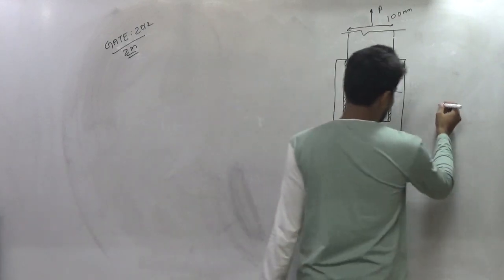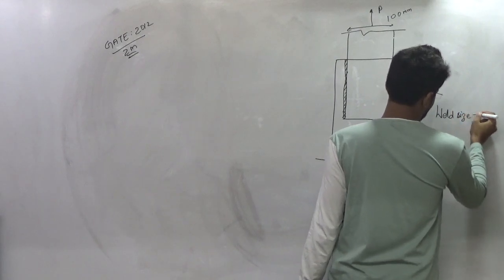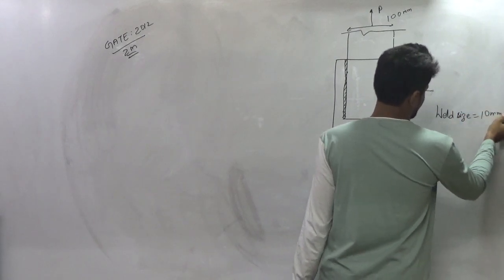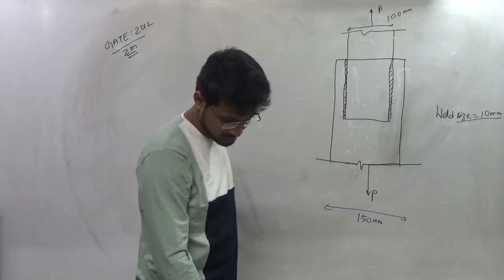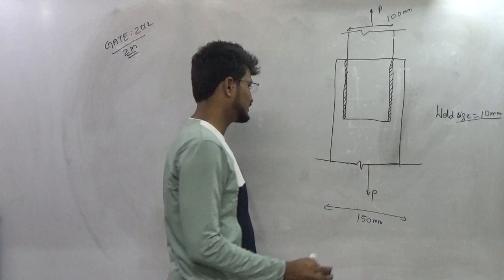Weld size is given as 10 mm, thickness of each plate is given as 12 mm.